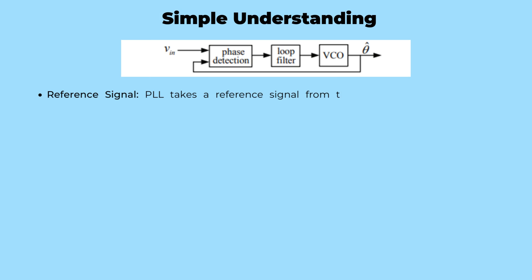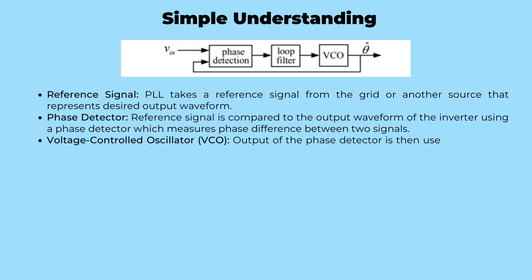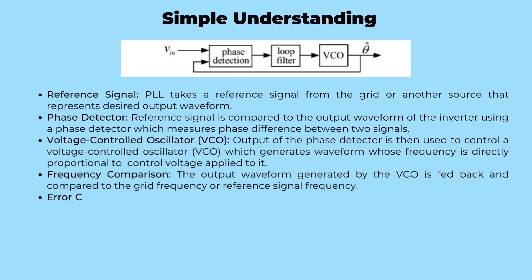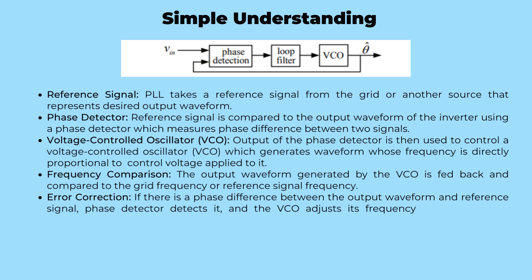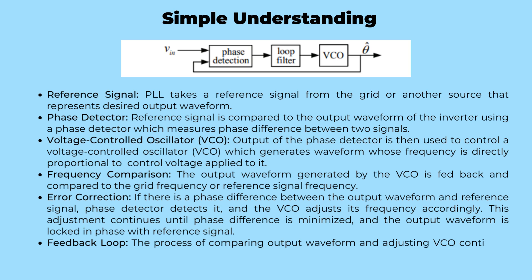The PLL takes a reference signal, which could come from the grid or another source representing the desired output waveform. This reference signal is then compared to the output waveform of the inverter using a phase detector, which measures the phase difference between the two signals. The output of the phase detector is used to control a voltage-controlled oscillator, which generates a waveform with a frequency directly proportional to the control voltage applied to it. The generated waveform is fed back and compared to the grid frequency or the reference signal. If a phase difference is detected, the voltage-controlled oscillator adjusts its frequency accordingly, and this iterative process continues until the phase difference is minimized, locking the output waveform in phase with the reference signal.